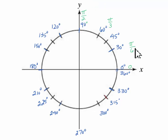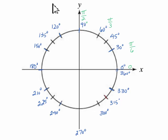If we keep counting pi over 6s — 1 pi over 6, 2 pi over 6, 3 pi over 6 — when I get to 120, that's going to be 4 pi over 6. But that's going to reduce to 2 pi over 3. So the radian measure of 120 degrees is 2 pi over 3.